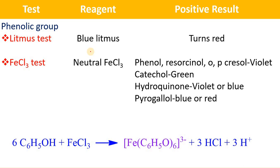Dear friends, welcome to Bond with RK Chemistry YouTube channel. In this video I will explain the identification tests of phenols. Generally phenols are identified by using litmus test, neutral ferric chloride test, bromine water test, thaline dye test, and Liebermann's nitroso test.